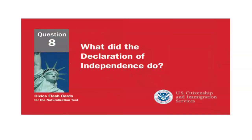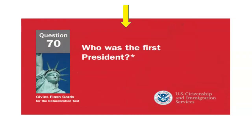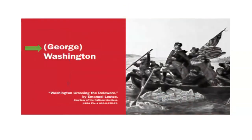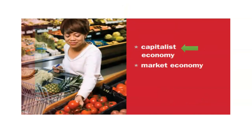What did the Declaration of Independence do? Declare our independence from Great Britain. Who was the first President? George Washington. What is the economic system in the United States? Capitalist economy.